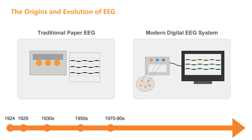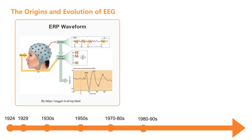Entering the latter half of the 20th century, technology embraced a digital revolution. Traditional paper electroencephalograms were gradually replaced by digital systems, significantly enhancing the ability to store, process, and analyze signals. Researchers no longer needed to analyze brainwave patterns on paper strips, but could use computers for automated processing. The emergence of digital EEG gave rise to an important research direction: event-related potentials, abbreviated as ERP. This technique captures the brain's electrophysiological response to specific events, extracting meaningful signals from background noise through averaging. ERP is like finding a specific sound in a noisy environment, providing a precise tool for studying cognitive processes.